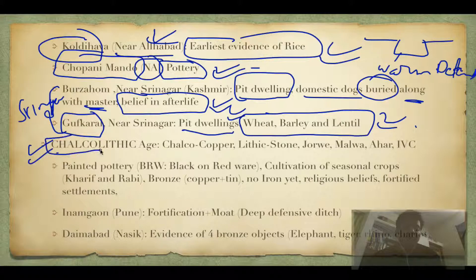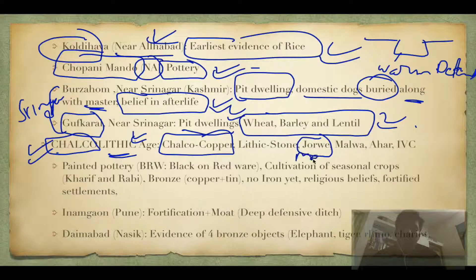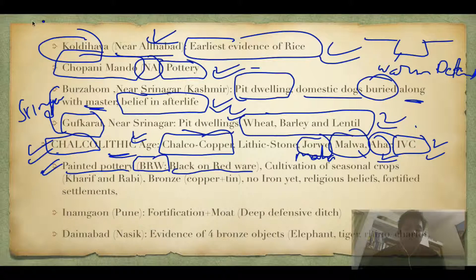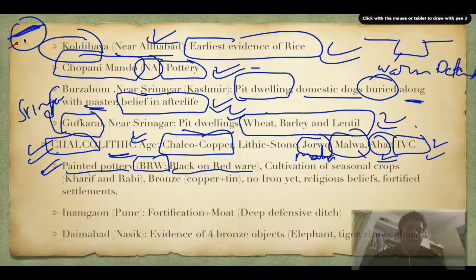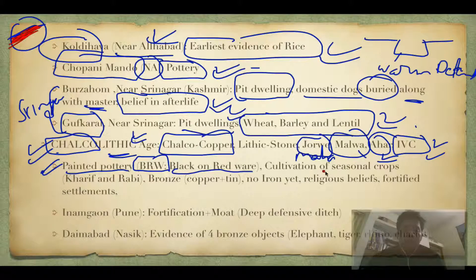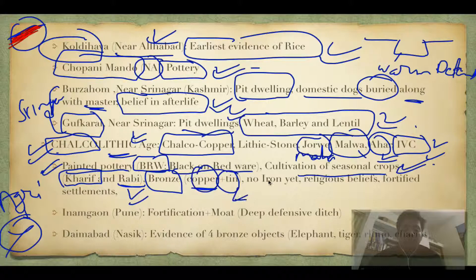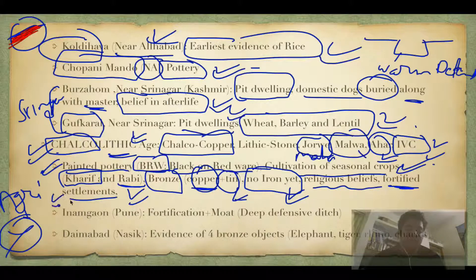Then we move to the Chalcolithic age. 'Chalko' means copper, 'lithic' means stone — so it is the Copper Age. Various civilizations in this age include Jorwe in Maharashtra, Malwa near MP, Ahar in Rajasthan, and IVC. They are characterized by painted pottery, especially black-on-red ware — a black base with red painting. They cultivated seasonal crops including Kharif and Rabi. They also developed bronze — copper plus tin — but importantly, there was still no iron.